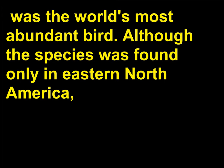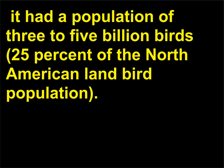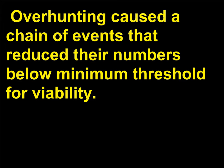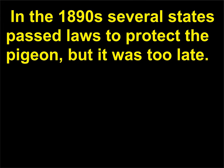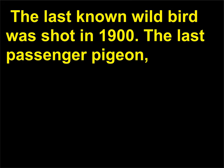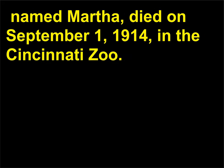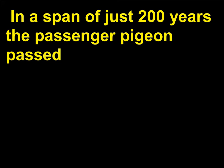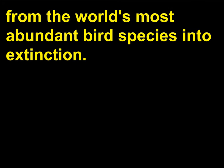The passenger pigeon, Ectopistes migratorius, was the world's most abundant bird. Although the species was found only in eastern North America, it had a population of 3 to 5 billion birds — 25% of the North American land bird population. Overhunting caused a chain of events that reduced their numbers below the minimum threshold for viability. In the 1890s, several states passed laws to protect the pigeon, but it was too late. The last known wild bird was shot in 1900. The last passenger pigeon, named Martha, died on September 1, 1914, in the Cincinnati Zoo. In a span of just 200 years, the passenger pigeon passed from the world's most abundant bird species into extinction.